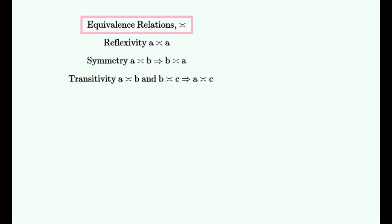Hello and welcome to this video about non-equivalence relations. We'll start off by talking about equivalence relations. If a relation between two mathematical objects is an equivalence relation, then it satisfies these three qualities: reflexivity, symmetry, and transitivity.